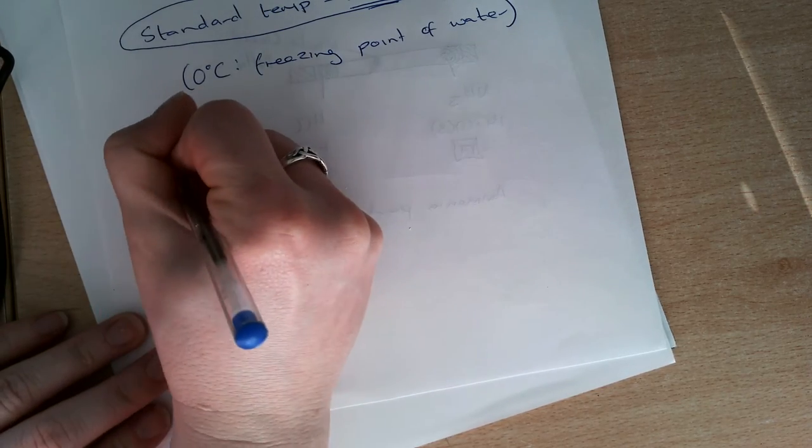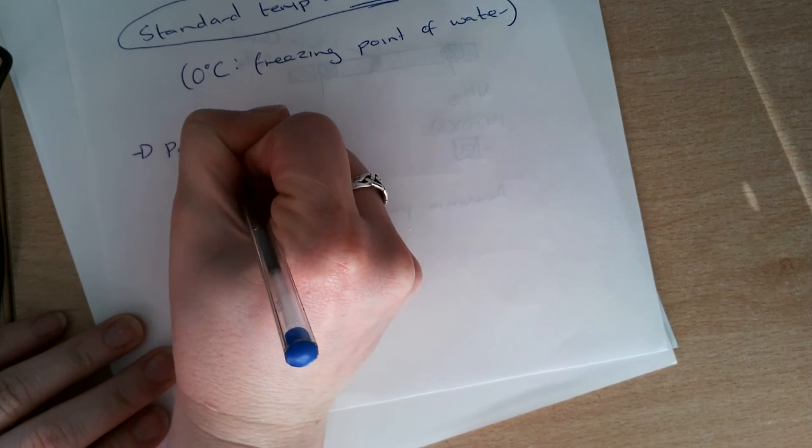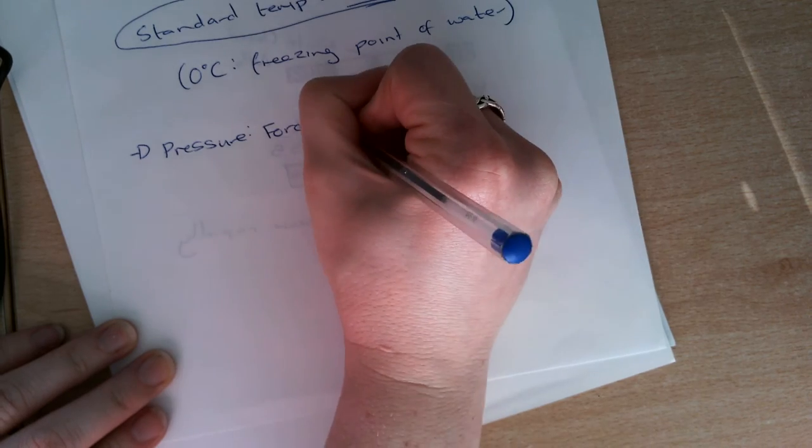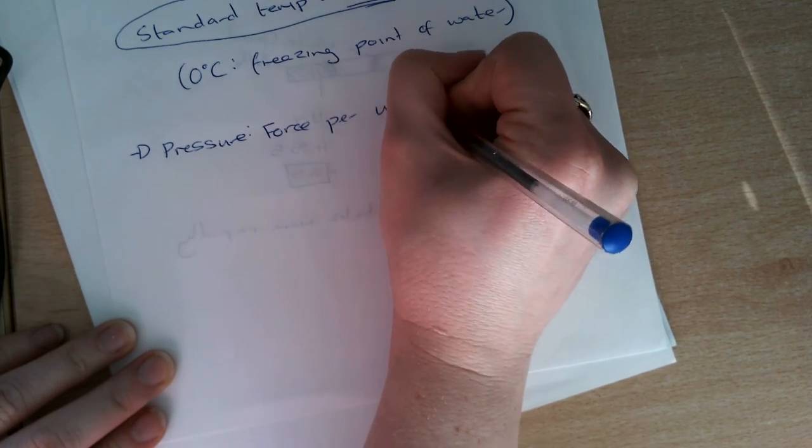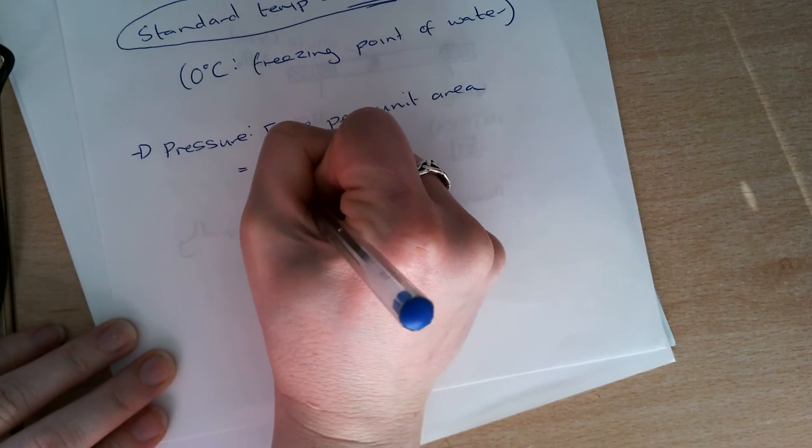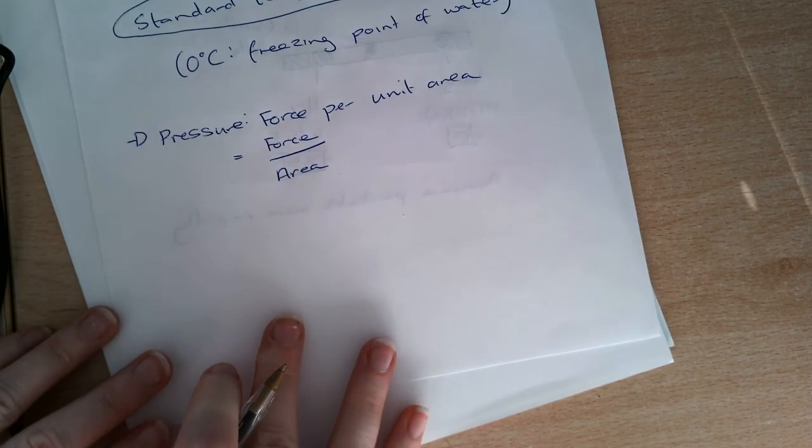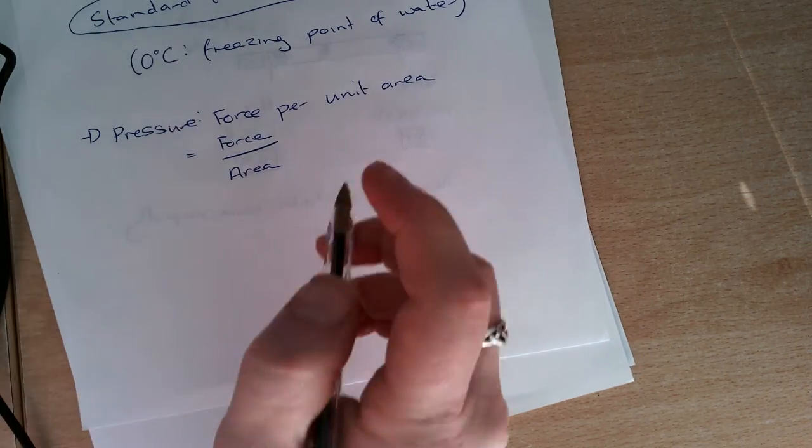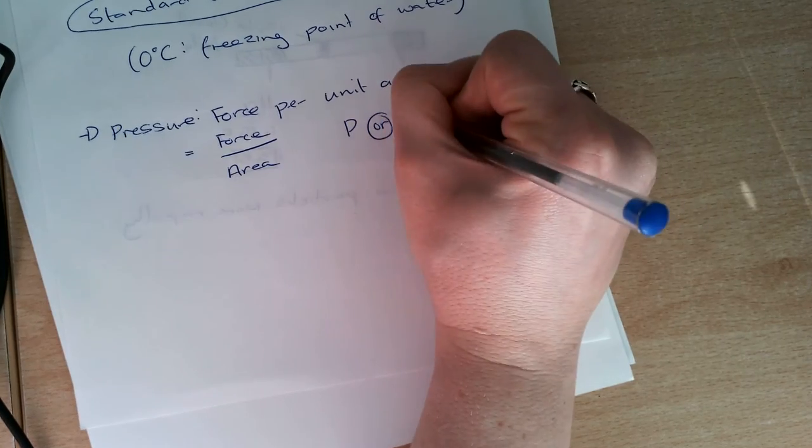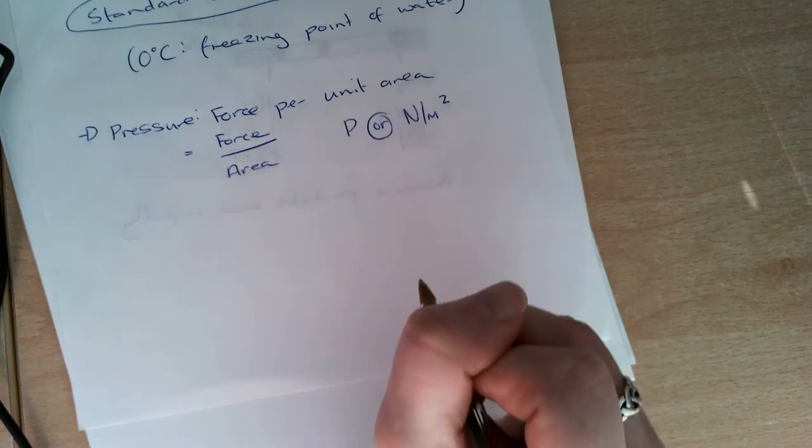The next thing then that we have is pressure. And again, for our junior search, it is the force per unit area. Remember we had a formula: pressure equals force divided by area. So its unit is in pascals or newtons per meters squared.